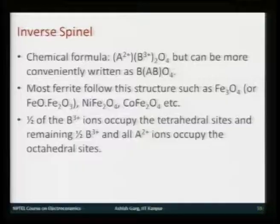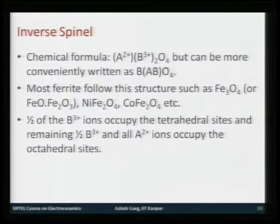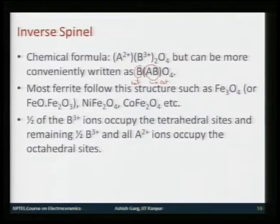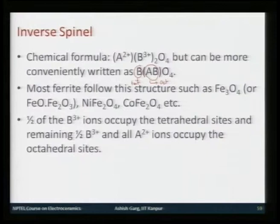In inverse spinel, the chemical formula is written as B[AB]O4. What this means is that 50 percent of total B ions occupy tetrahedral sites, and A plus the remaining B occupy octahedral sites. Examples include Fe3O4 (written as FeO·Fe2O3), NiFe2O4 (NiO·Fe2O3), and CoFe2O4 (CoO·Fe2O3). Many of these materials are used in magnetic applications.